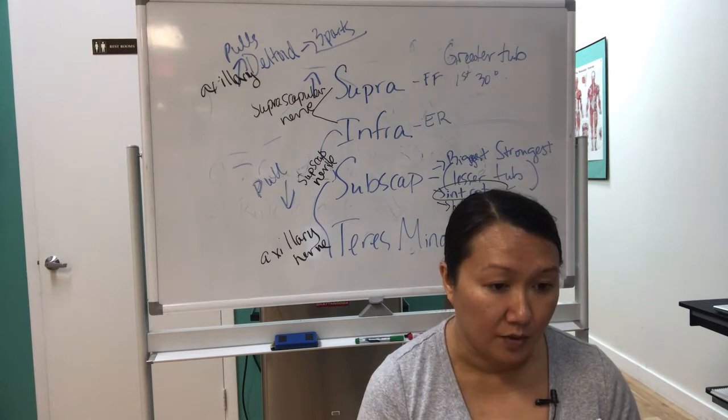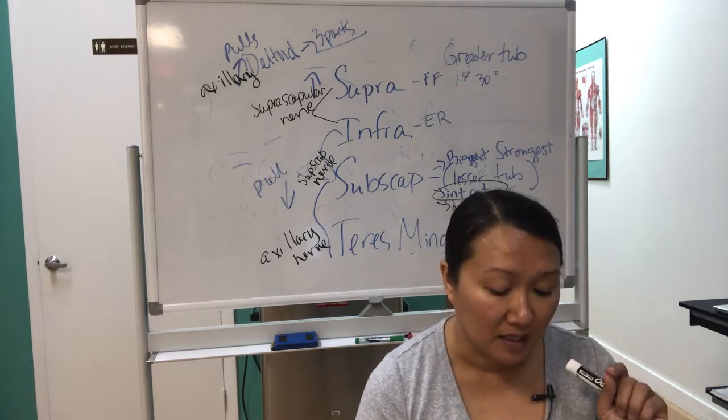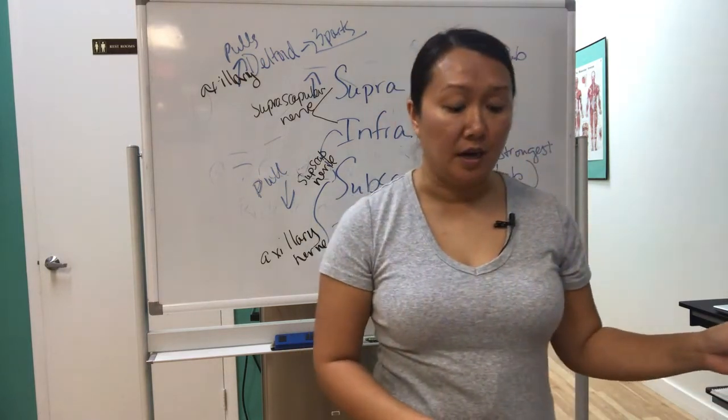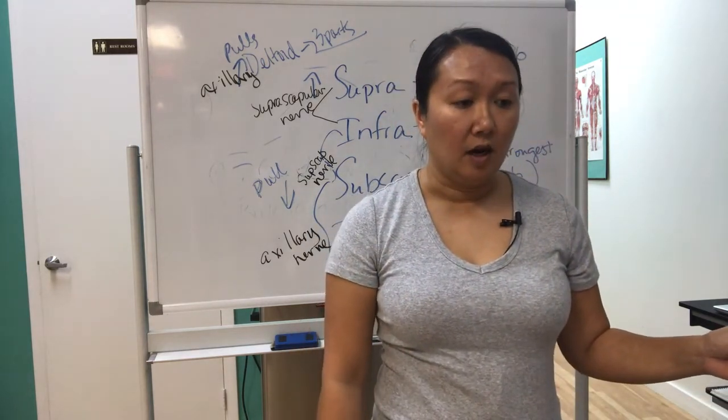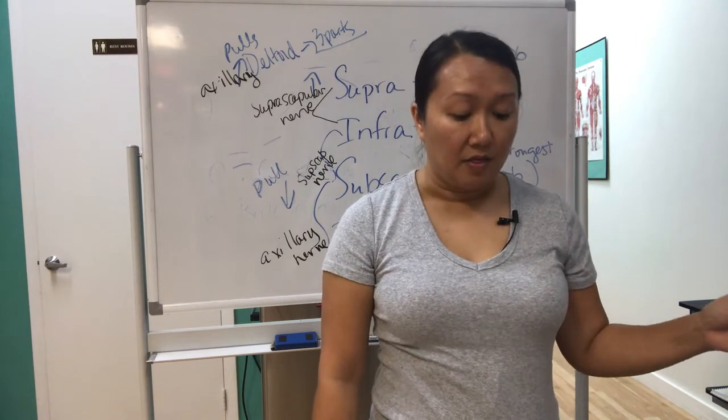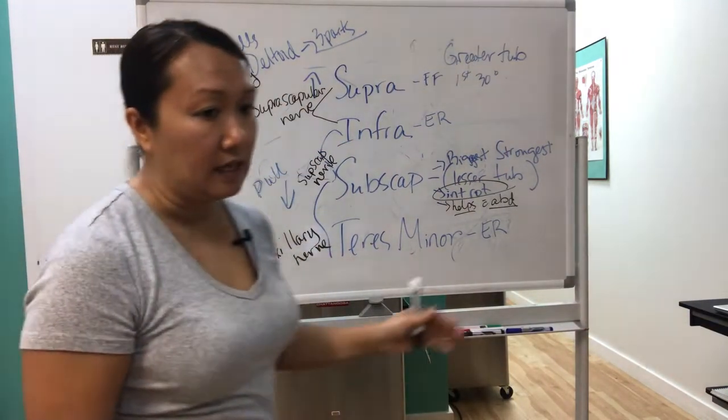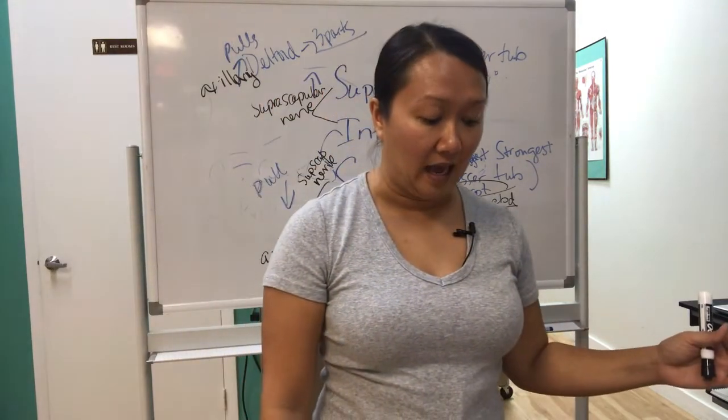So in this particular chapter, when they talk about the lag sign, they're talking about you're going to place someone in external rotation. And if they can't hold that external rotation, that it's most likely an infraspinatus tendon tear if there's a certain amount of lag.